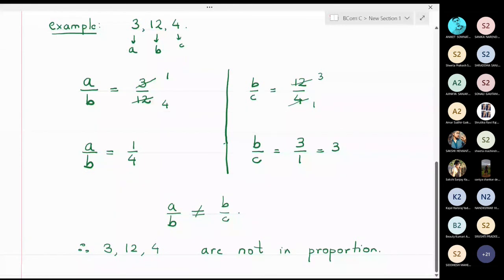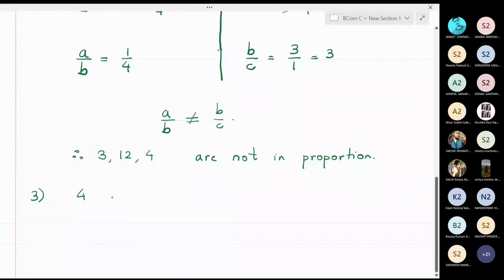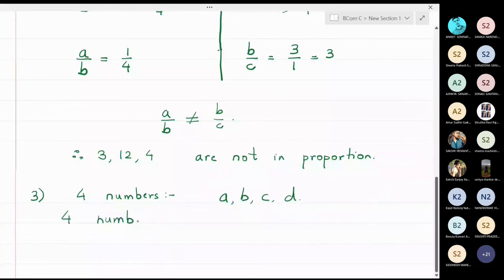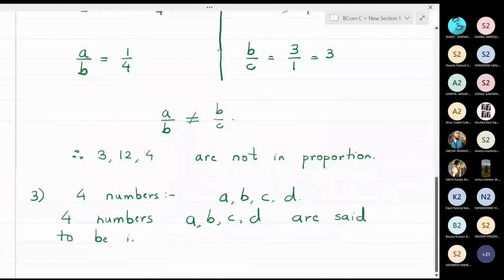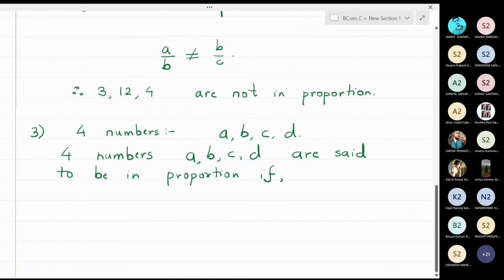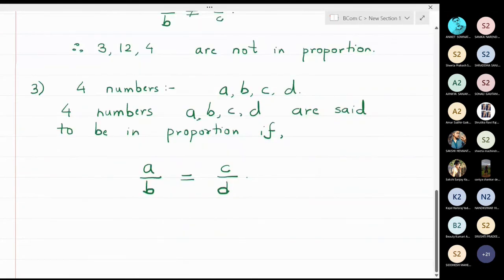Now instead of three numbers, let us take four numbers a, b, c, and d. Four numbers a, b, c, d are said to be in proportion if a upon b is equal to c upon d. If these two ratios are equal, then we say these four numbers are in proportion.